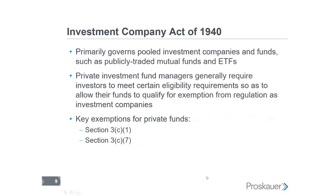Moving on to the Investment Company Act, which is an entirely different act. This act is not about issuing securities — it governs investment companies, including mutual funds. Like the Securities Act, you either need to be registered — which no private investment fund wants to do due to the same burdens — or find an exemption. There are two principal exemptions used by private investment funds: Section 3C7, which is the most commonly used, and Section 3C1, which is older and more complicated in its application.